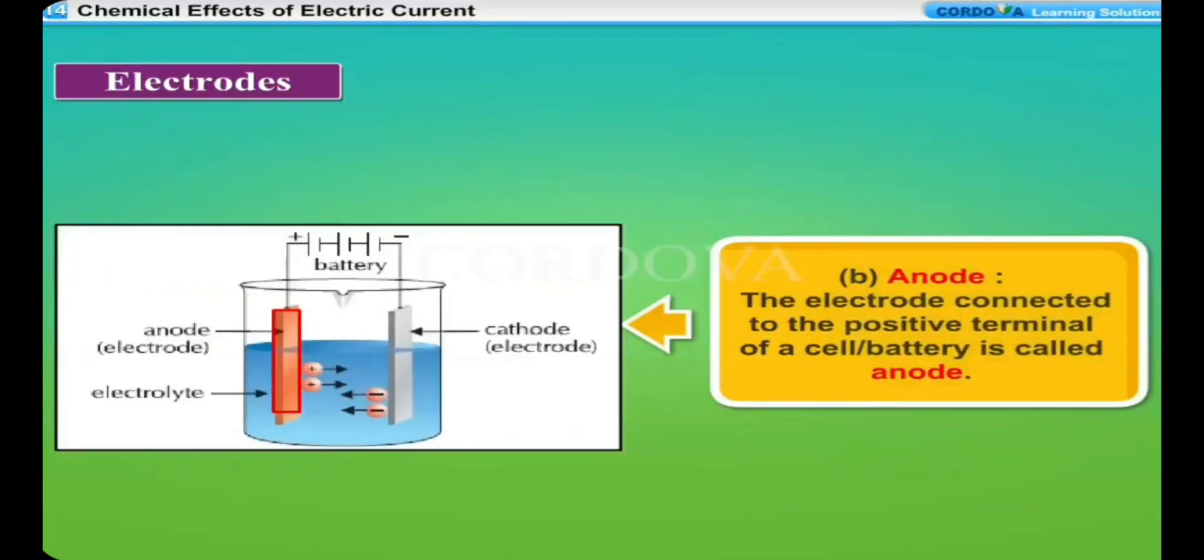Anode: The electrode connected to the positive terminal of a cell or battery is called anode. During electrolysis, the negatively charged ions (anions) present in the electrolyte move towards the anode.